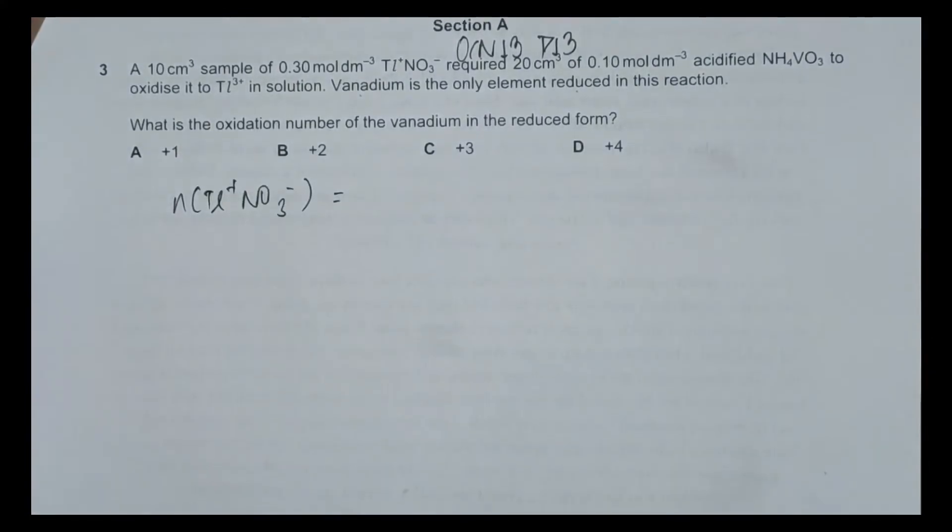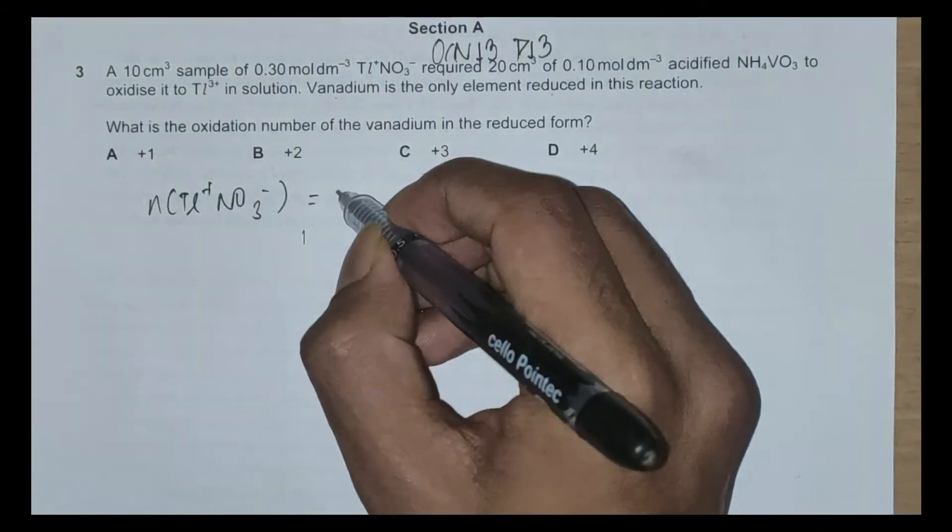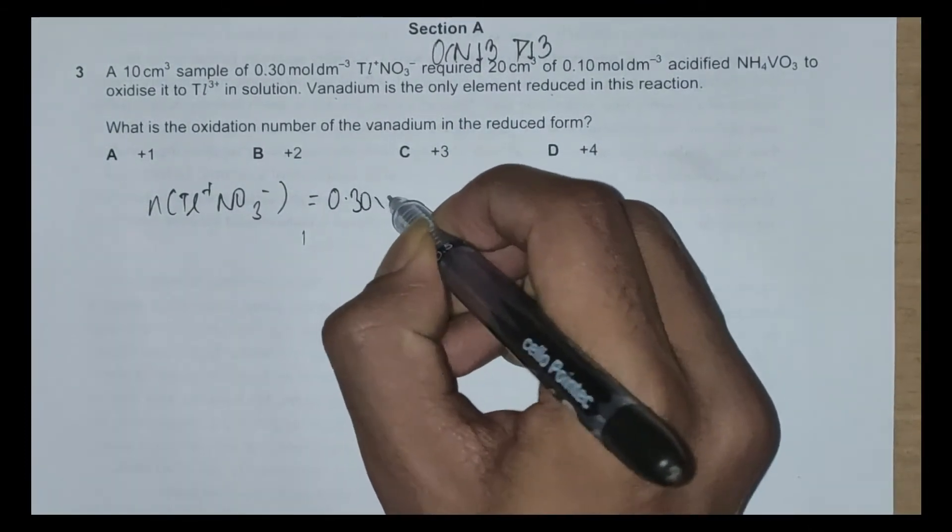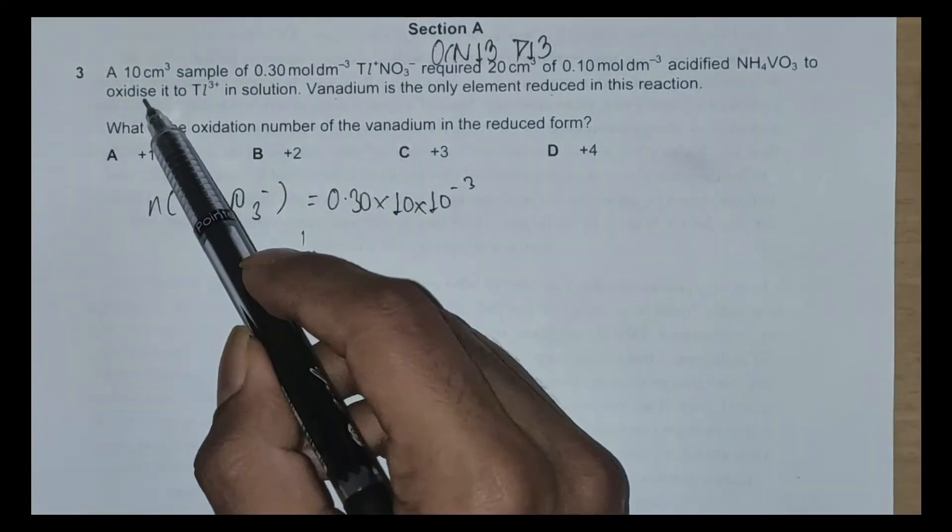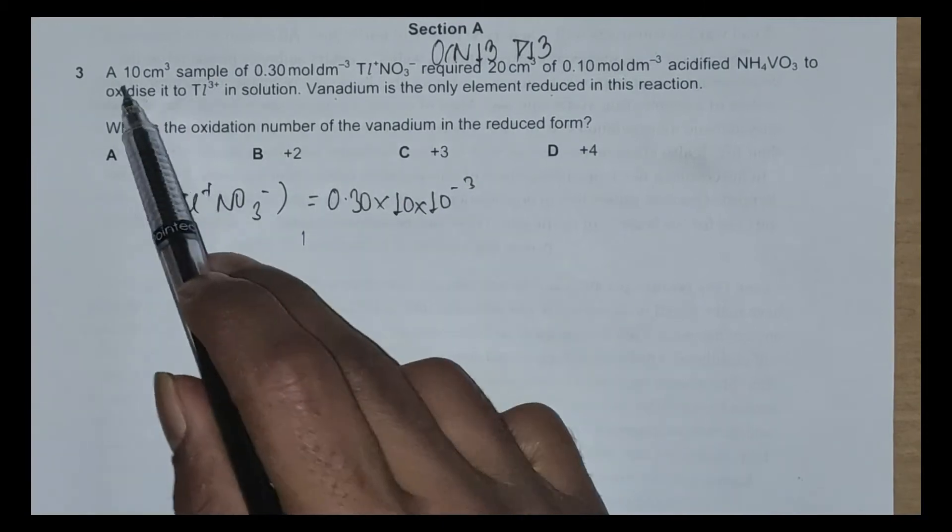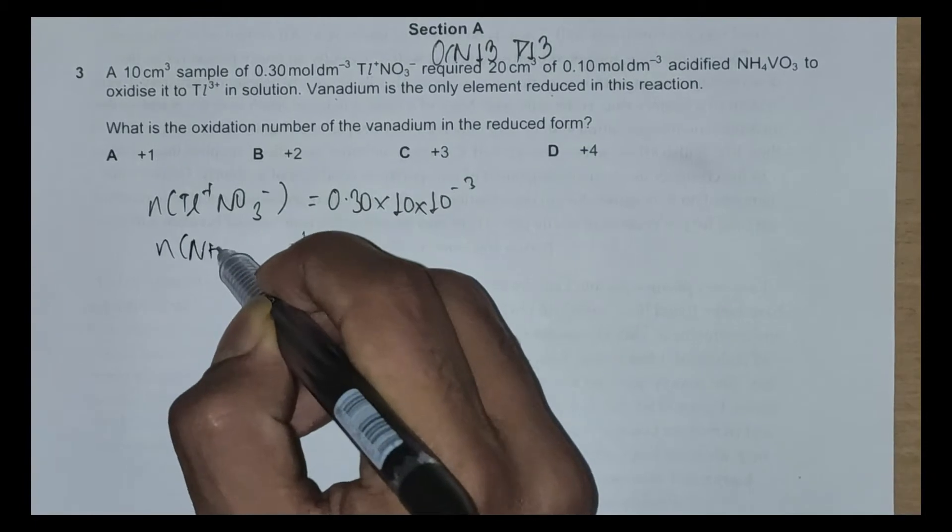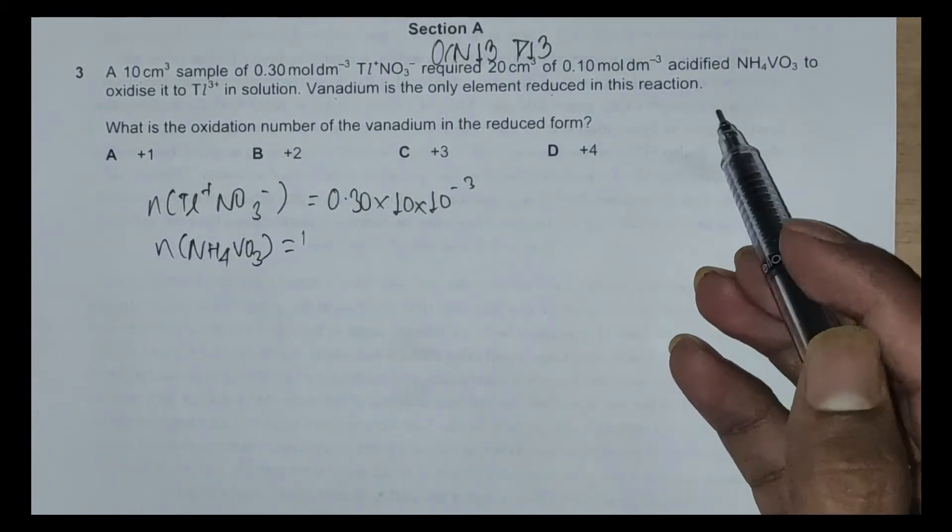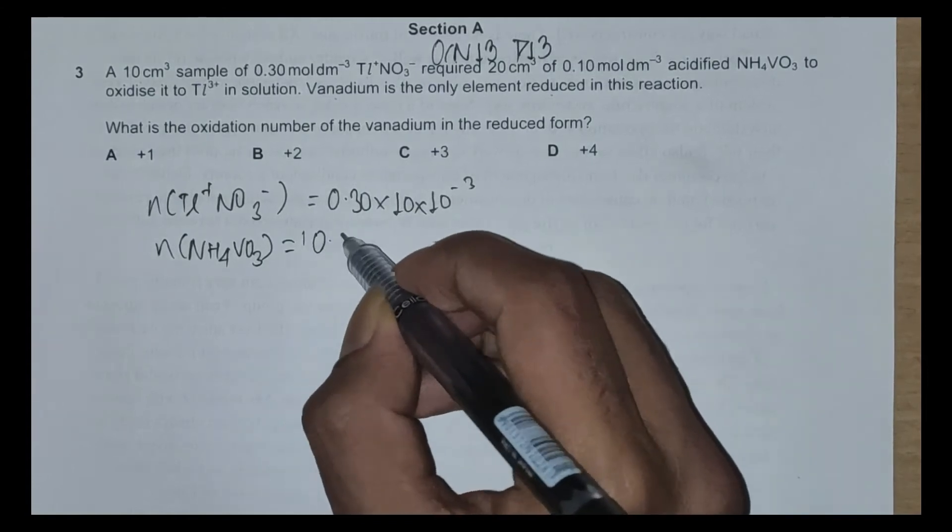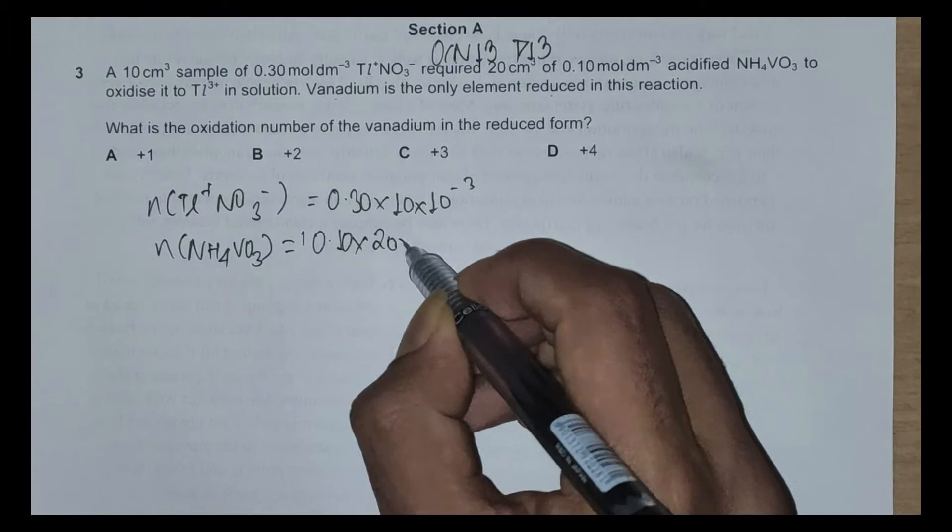The moles of TL⁺NO₃⁻ are 0.30 times 10 multiplied by 10⁻³ because it's given in cm³ and concentration is in dm³, so we'll convert this to dm³ as well. And moles of NH₄VO₃ is given as 0.1 multiplied by 20 multiplied by 10⁻³.